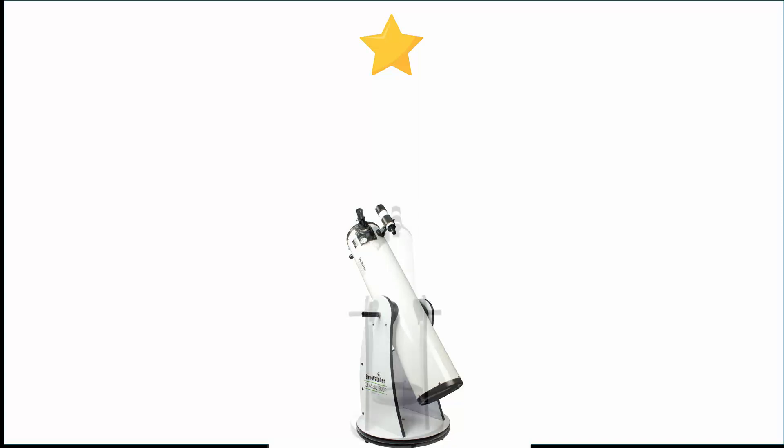Now rotate the telescope tube clockwise or anti-clockwise to point towards the target star. Now step a couple of paces behind the rear of the telescope tube. Take a look at your target star and drop an imaginary plumb bob line down from the star towards the horizon.